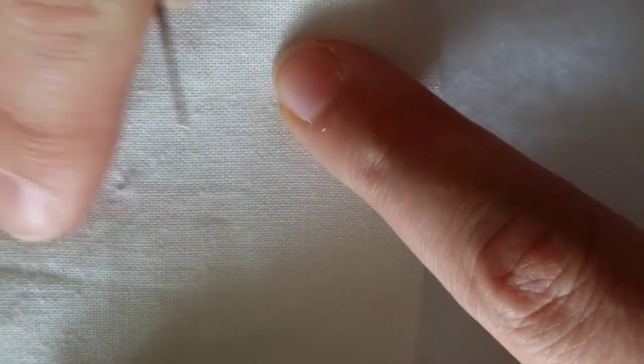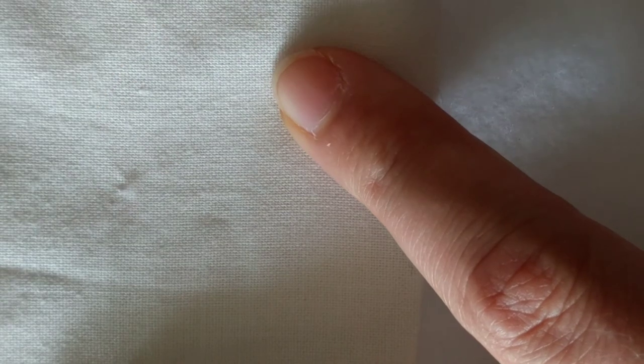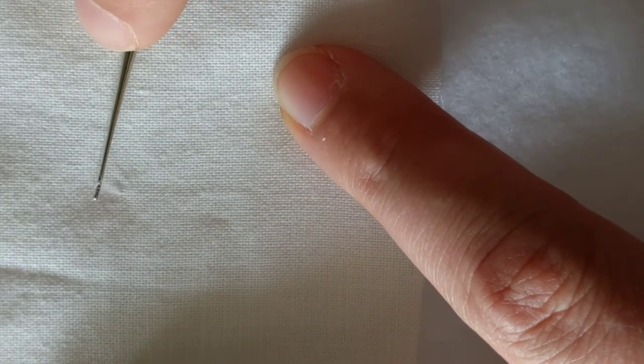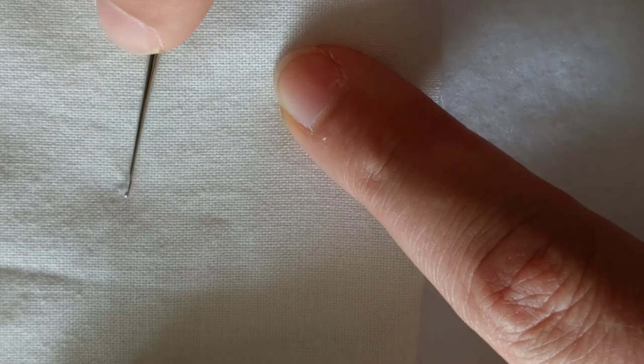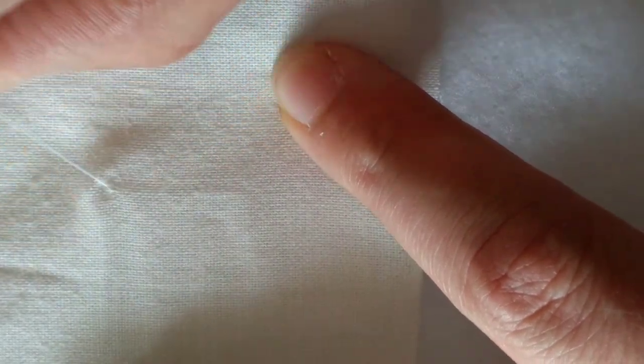Sometimes you're not so lucky and it doesn't come out. Now this little batting fluff you can trim off very close with scissors, but honestly, if you keep pulling at it, you just keep pulling out more.